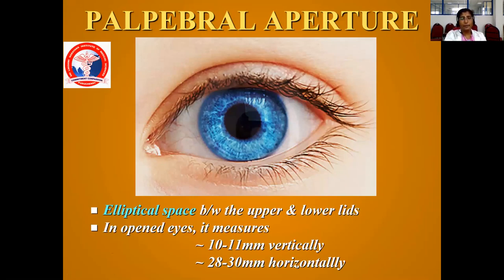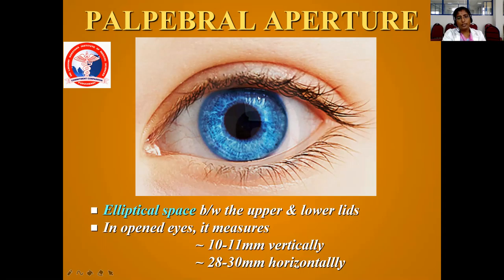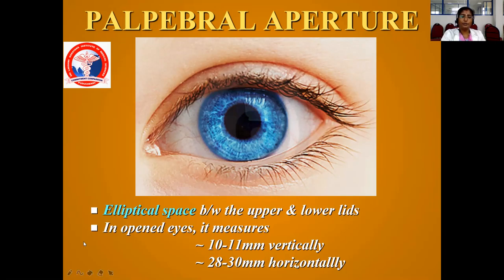Coming to the palpebral aperture — what is it? It is the elliptical space between the upper lid and the lower lid. You have to know the normal dimensions. Normally when the eye is open, the vertical dimension is 10 to 11mm and horizontal is 28 to 30mm. The clinical significance: in ptosis, when the upper lid comes down, this palpebral aperture will be shortened. And in blepharophimosis or similar conditions, this horizontal aperture will be elongated.